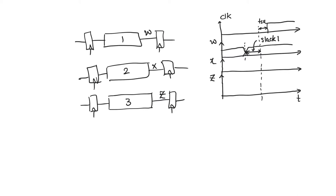Now let's look at node X, and let's assume that X changes at exactly the point where T_setup is. That means the slack for path two is zero — slack two equals zero. So slack one is positive and slack two is zero. What this means is that for the clock period and clock frequency we are using, path two is a critical path because it is ready exactly at the time it needs to be ready.